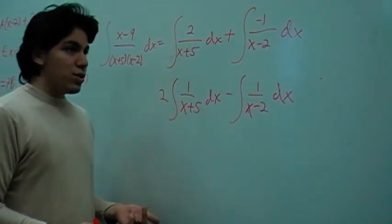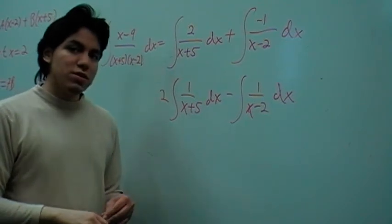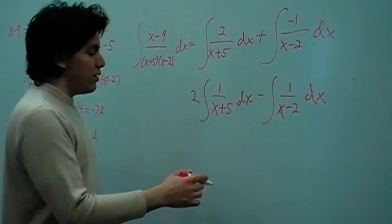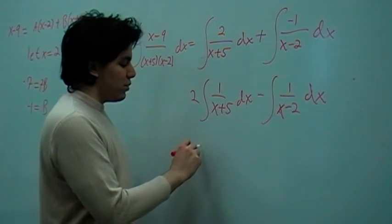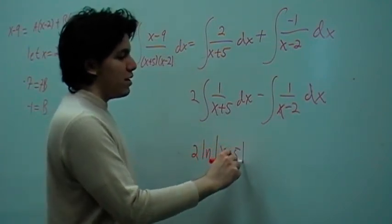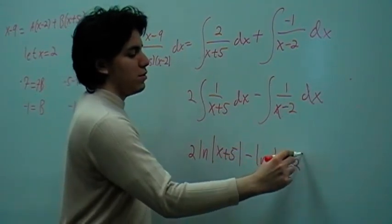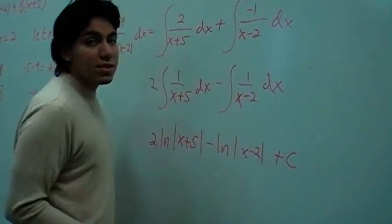Okay, from here, so now our solution is going to be 2 times ln absolute value of (x plus 5) minus ln absolute value of (x minus 2) plus some arbitrary constant c.